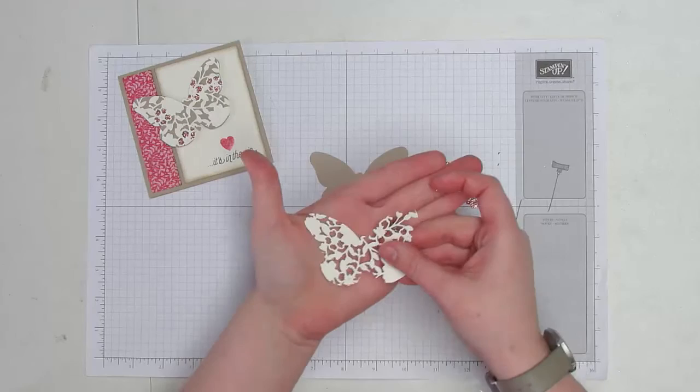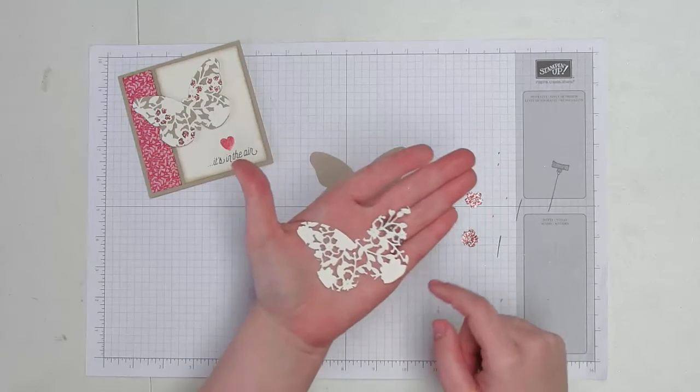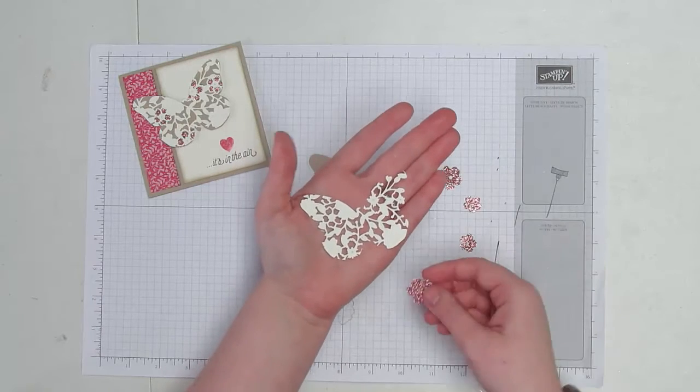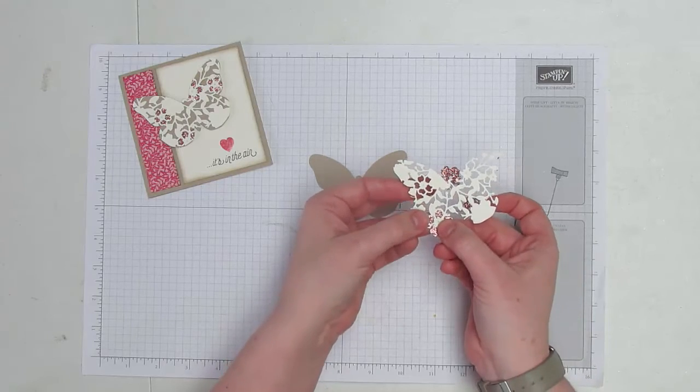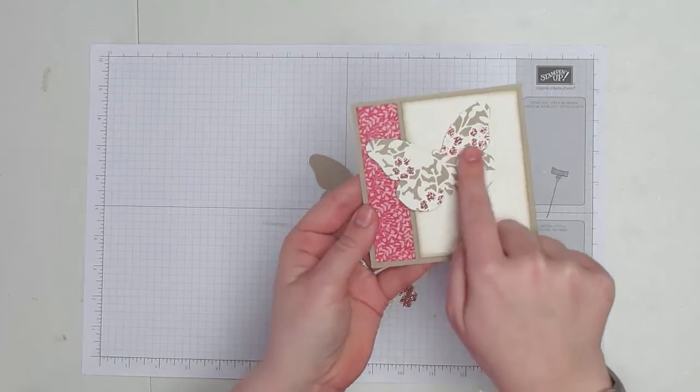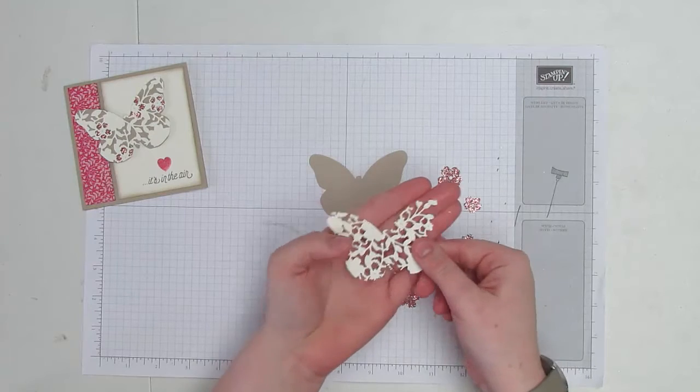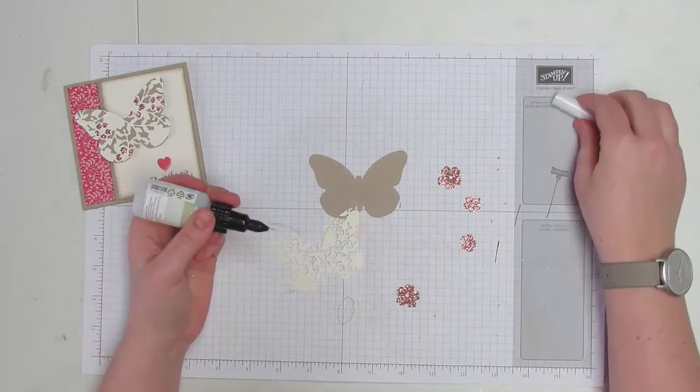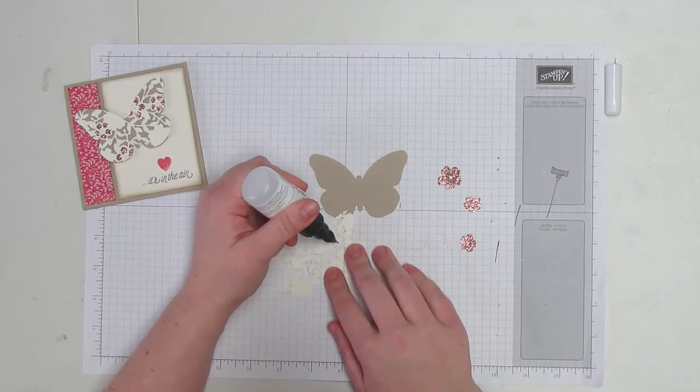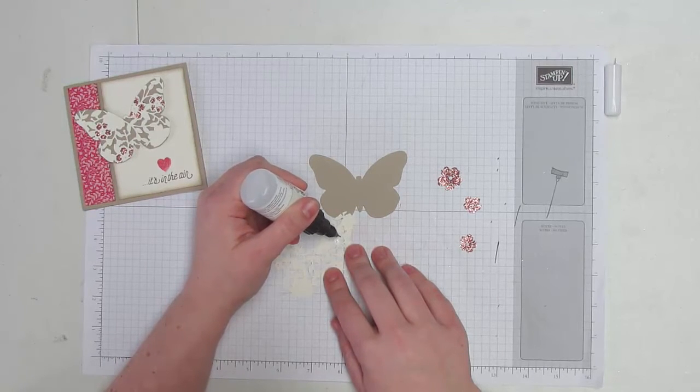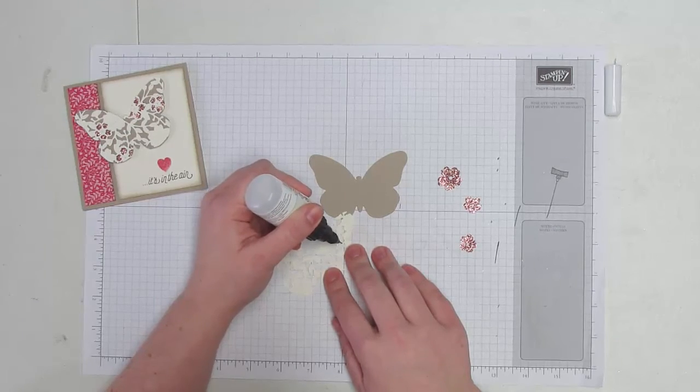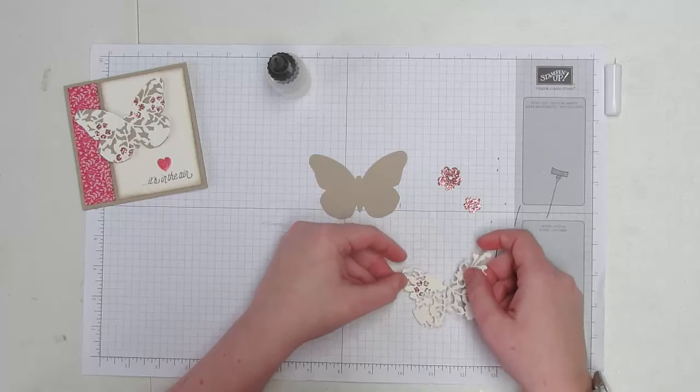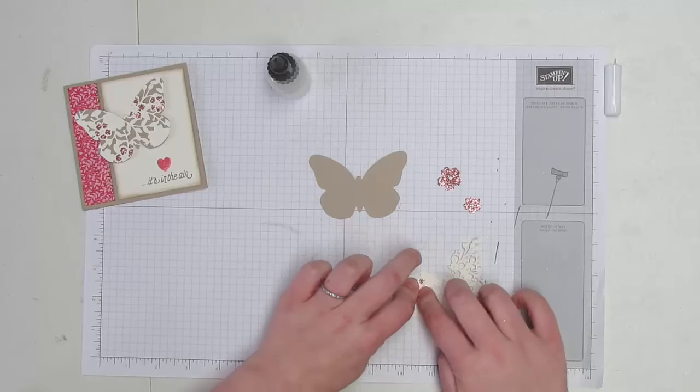Now the thing that's neat about the Bloomin' Heart, if you look at it really closely, is you'll notice that there are outlines of flowers as well as solid flowers. The flowers actually fit behind the outline. So that's how I'm getting these little sparkly flowers behind. You'll see there's a little center point in each of those. That's what I'm going to go through with my fine tip glue pen, and we're just going to add a little bit of glue in each of those spots.